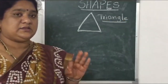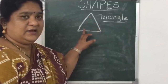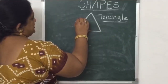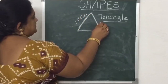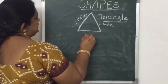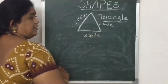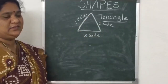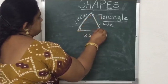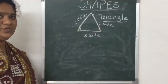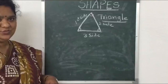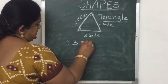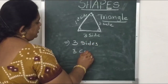Triangle means three, so it has three sides. First side, second side, and third side. Because it has three sides — triangle. It also has three corners. Triangle has three sides and three corners.